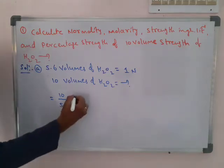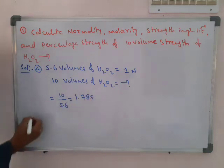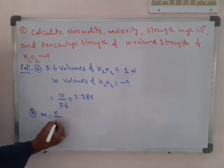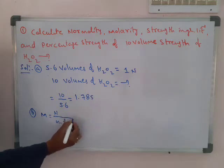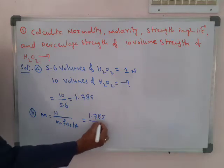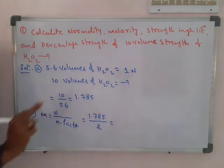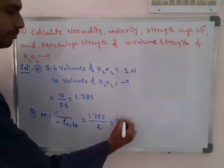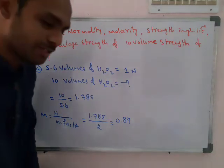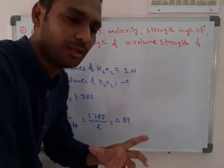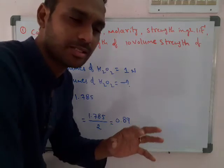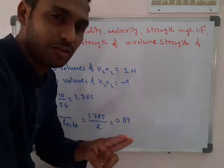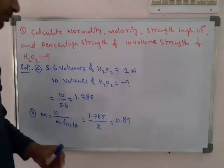We know the relation: 5.6 volumes = one normality. So what about 10 volumes of hydrogen peroxide — how much normality? Approximately we get 1.785 normality. Next, calculate the molarity. We know the relation: molarity equals normality divided by n-factor.